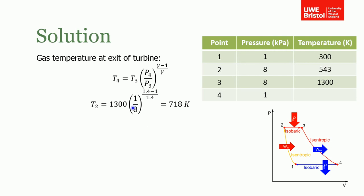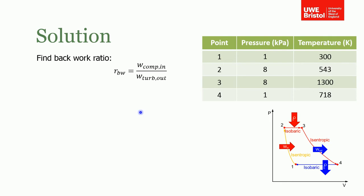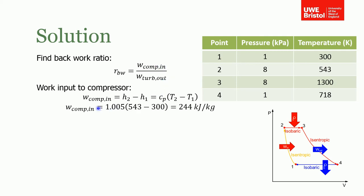That was the second part of the question, to find the gas temperature at the exit of the turbine. Then you're asked to find the back work ratio. Now, the back work ratio is, as the name suggests, the amount of work that's put back into the system. So it's the work that's put into the compressor divided by the work that's done by the turbine or by the system—the work you put in over the work that you get out. Obviously, we have to calculate these.